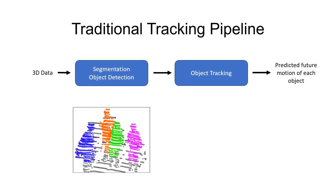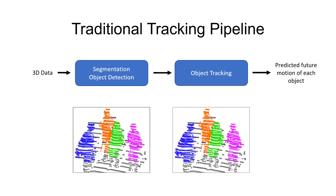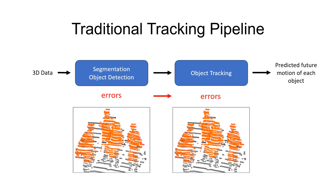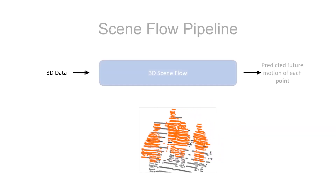The input clouds are segmented into unique objects, and the motion of each object is individually tracked to predict future motion. Unfortunately, if there are errors in segmentation, they will propagate to the tracking algorithm, leading to incorrect estimates of how the object will move, and potentially tragic results. This problem stems from focusing on objects instead of focusing directly on the data.